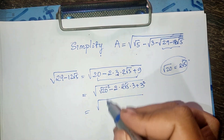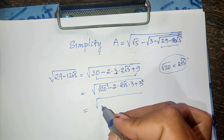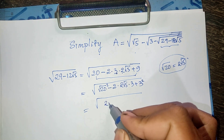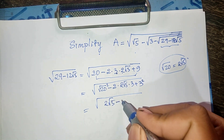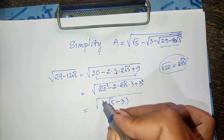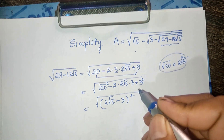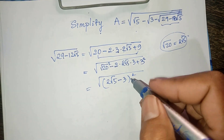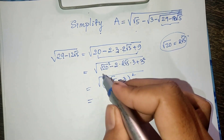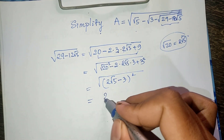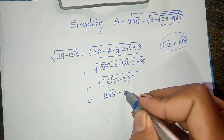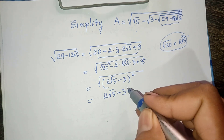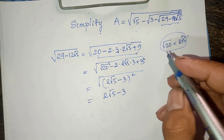So this equals 2 square root of 5 minus 3. That is, square root of 29 minus 12 square root of 5 equals 2 square root of 5 minus 3.